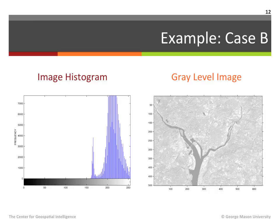In contrast to case A, in case B the image histogram on the left is concentrated at high gray levels and is narrow and not well spread throughout the dynamic range. As a result, the image on the right is very bright and again has poor contrast.